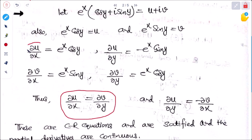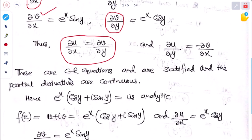We can see that ∂u/∂x equals ∂v/∂y, and ∂u/∂y equals −∂v/∂x. These CR (Cauchy-Riemann) equations are satisfied and the partial derivatives are continuous, so e^x(cos y + i sin y) is an analytic function.